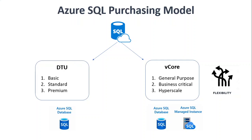Standard is more of a general-purpose kind of thing, and premium is for applications that need more resources. DTU is a predefined unit in Microsoft Azure — a combination of I/O, memory, and CPU. With DTU, resources are predefined; you can't change individual components. For example, you can't change just the memory within a standard tier. To overcome this problem, they have another purchasing model: vCore.